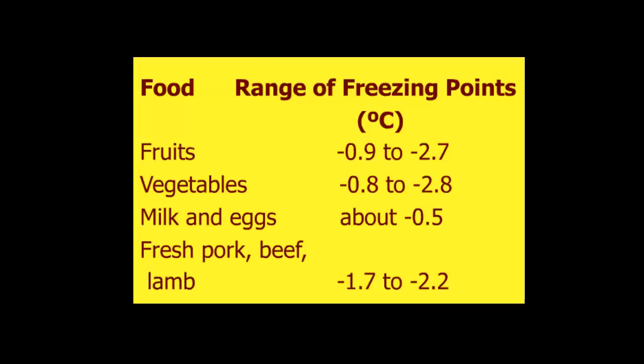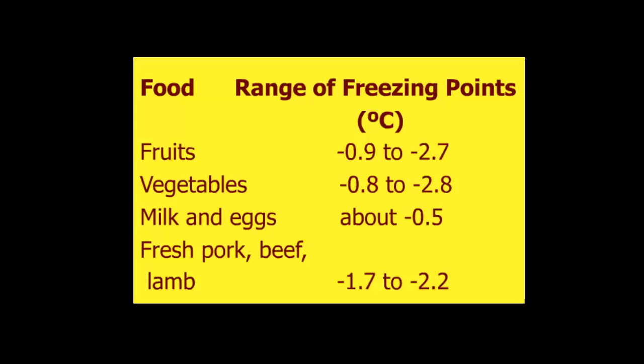Typically, the range of freezing points of food is between -1 to -5°C, as we see in this table. For example, fruits freeze between -0.9 to -2.7°C, vegetables -0.8 to -2.8°C, milk and eggs about -0.5°C, and meats from -1.7 to -2.2°C. I hope this has given you an understanding of the freezing point of water and how that freezing point is lowered when a solute is added.